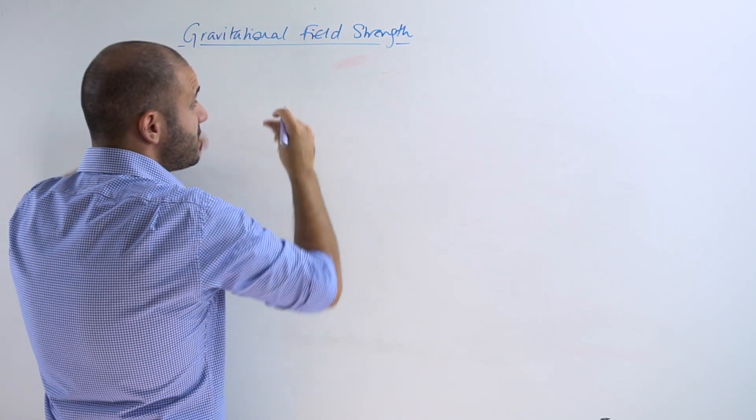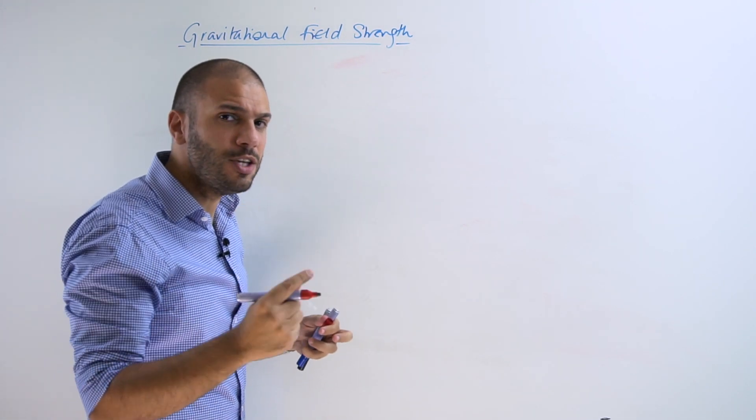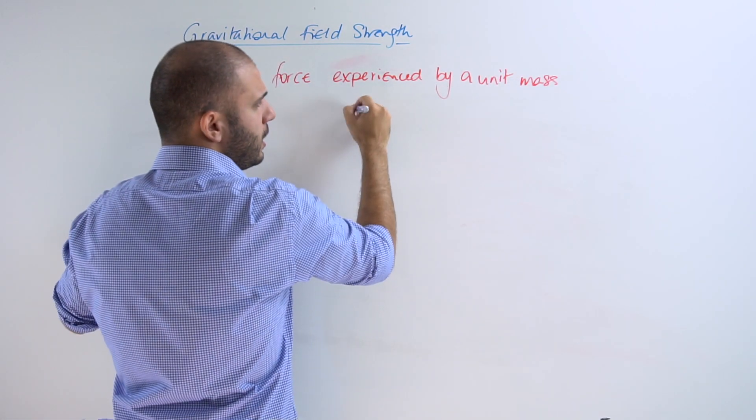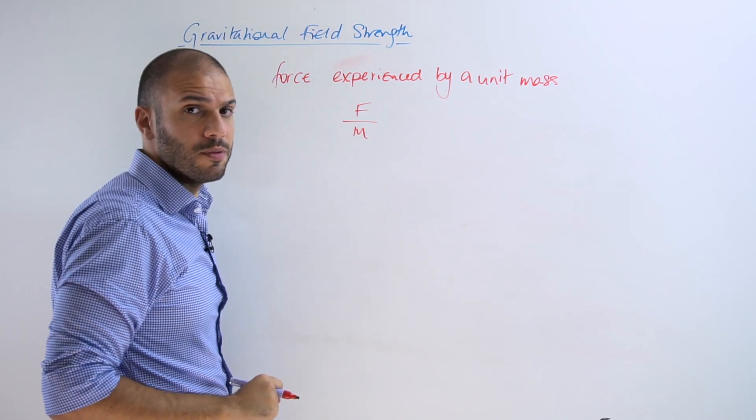Gravitational field strength is defined as the force experienced by a unit mass. Its mathematical equation therefore is F/m, the force experienced by unit mass.